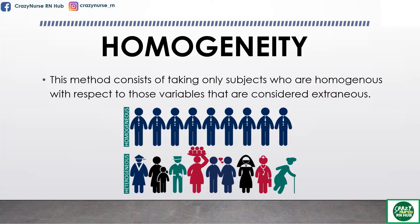Next is homogeneity. This method consists of taking only subjects who are homogenous with respect to those variables that are considered extraneous. For example, if you consider that gender could be an extraneous factor in the study on physical training, then include only men in the study. If age were the extraneous variable, then take only participants of the same age — no variation of age is included in the study.